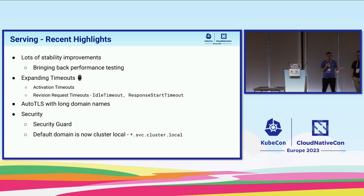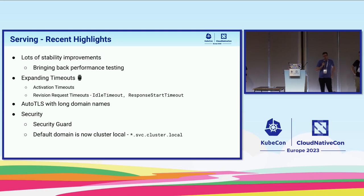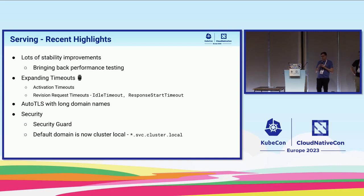One outstanding bug we fixed recently: with CERT manager, there was a limitation on domain length. If you have really long namespace or service names, that is now fixed with auto TLS. We've also been focusing on security — SecurityGuard is an extension that lets you apply policies to incoming requests, like rejecting certain headers or disallowing certain query params. We also changed the default domain from example.com to cluster-local, taking a more secure-by-default stance, letting operators expose domains afterwards.